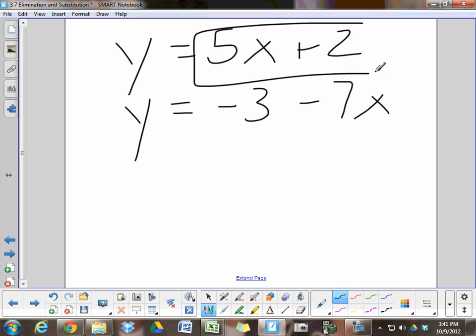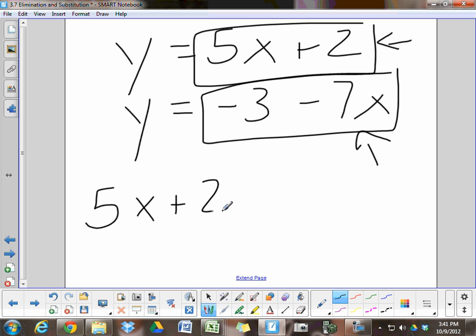Since y equals this and y equals that, a few of my classes we talked about, then this equals that. Then you could set this equation equal to that equation. 5x plus 2 equals negative 3 minus 7x, and then you could solve using the algebraic methods we've talked about so far this year.